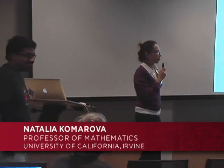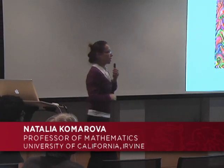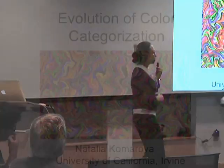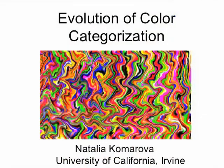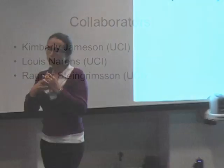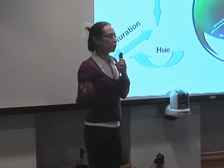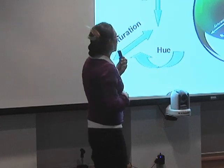This is a different and quite recent project. It's a collaboration with other people at the University of California, Irvine. Kimberly Jameson is a psychologist interested in color, and Louis Narens and Ragnar Stangerson are both philosophers. I'll be talking about color categorization in people and some evolutionary and mathematical aspects of those.